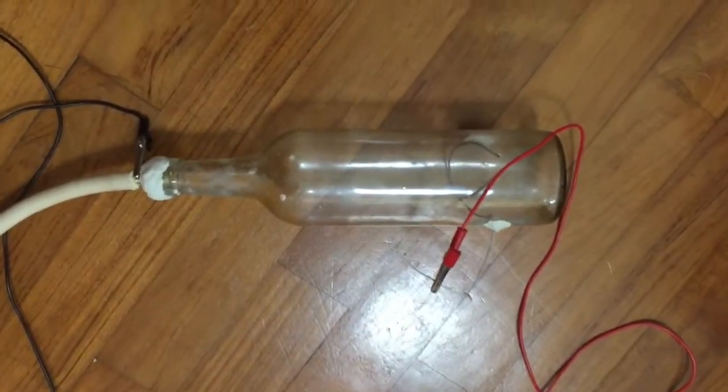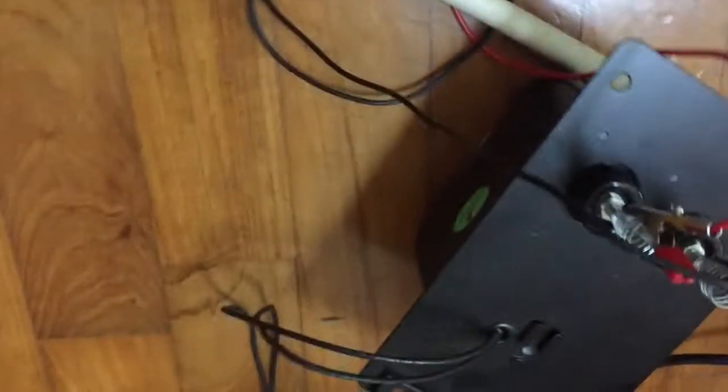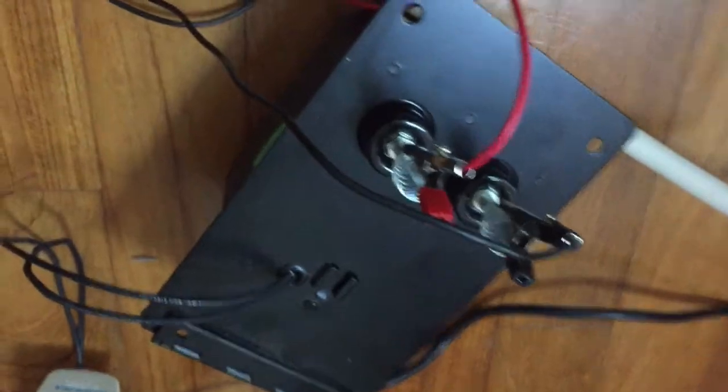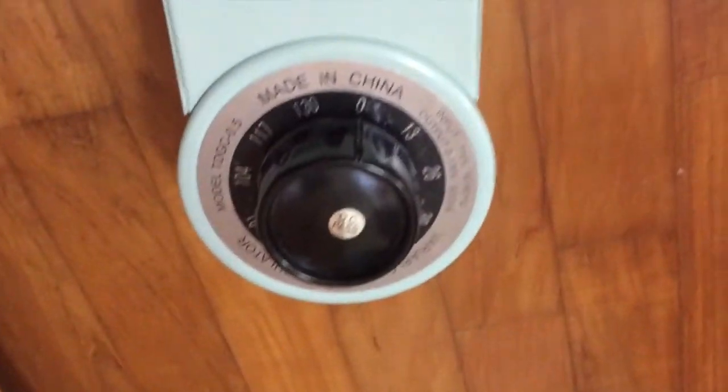This is my cathode ray tube. This wire is connected to the oil burner ignition transformer, so 10,000 volts come from here and go to each of these electrodes, one here and one here. The oil burner ignition transformer takes in 120 volts from the variac.